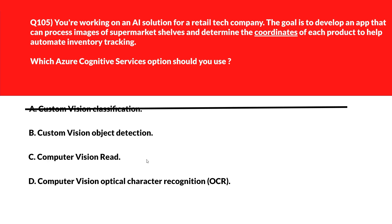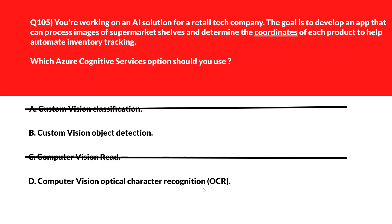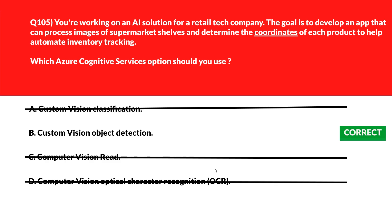Option C says Computer Vision Read — this targets reading text from documents, not locating products in photos, so wrong answer. Option D says Computer Vision OCR — OCR extracts visible text but doesn't assign coordinate data to physical items, so also wrong. We'll lock option B, Custom Vision Object Detection, as the right answer.